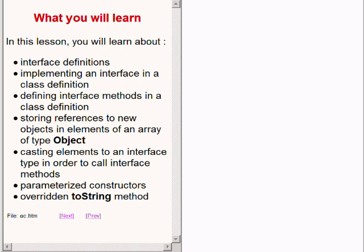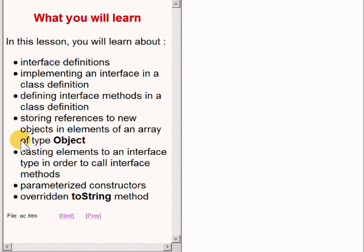One of the very important concepts in object-oriented programming using Java is the use of the Java interface. In this lesson you will learn about interface definitions, implementing an interface in a class definition, defining interface methods in a class definition, storing references to new objects in elements of an array of type Object, casting elements to an interface type in order to call interface methods, parameterized constructors, and the overridden toString method.